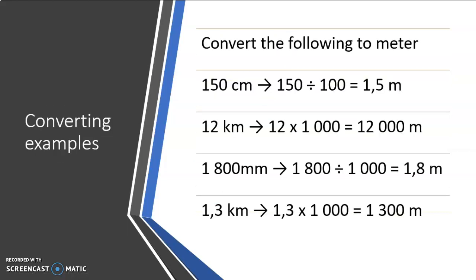Let's look at a few examples. Convert the following to meters. If I have 150 centimeters, remember I'm going to a bigger measuring unit and therefore I divide. I divide with a hundred because there's a hundred centimeters in a meter. Whenever I divide, I can imagine there is a comma there because this is a whole number. A hundred has two zeros, so I move this imaginary comma two spaces. One, two, and it will give me one comma five meters or one meter 50 centimeters or one and a half meter. They are all equal but different ways to write it.